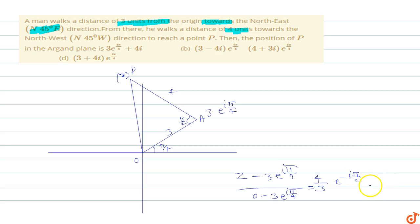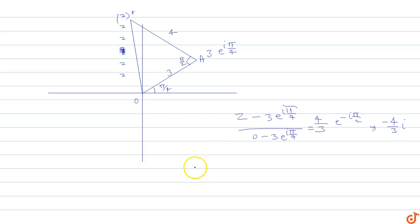This value gives z − 3e^(iπ/4) over −3e^(iπ/4) equals −4/3. Cross multiplying, we get 3z − 9e^(iπ/4) equals 12e^(iπ/4). So 3z equals 9e^(iπ/4) + 12e^(iπ/4).